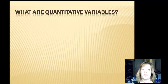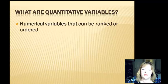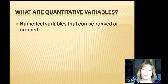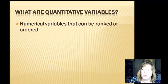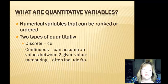Quantitative — the first part is quantity. When you see the N, think numbers. They're numerical variables that can be ranked or ordered. So there's qualitative, that's quality, and quantitative, that's quantity. You may have heard the saying 'quality over quantity,' but anyway, they're numerical.